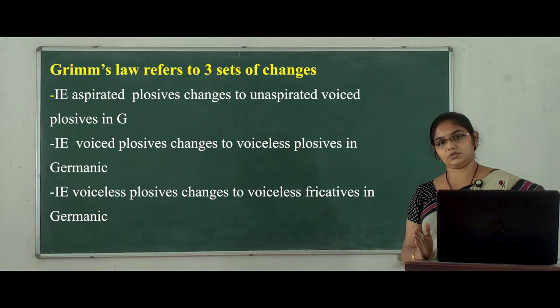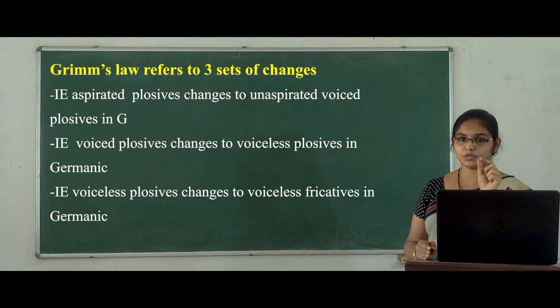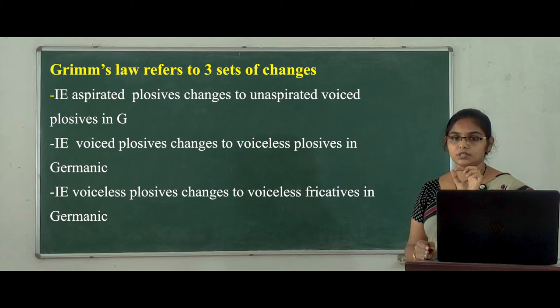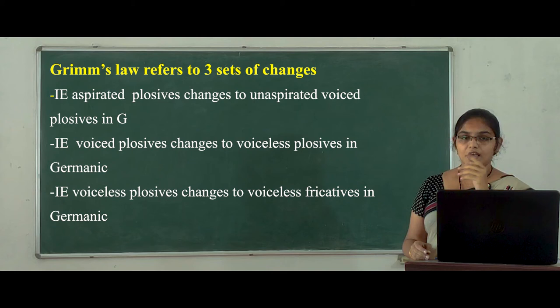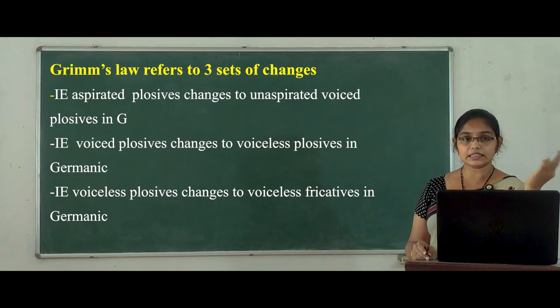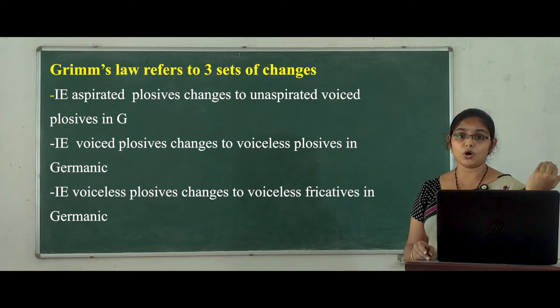Aspirated plosives are the combination of two sounds — for example, 'bh'. This changes into unaspirated voiced plosives, so 'bh' changes into 'b'. The second set of changes: Indo-European voiced plosives change into voiceless plosives in Germanic. The third set of changes: Indo-European voiceless plosives change into voiceless fricatives in Germanic.